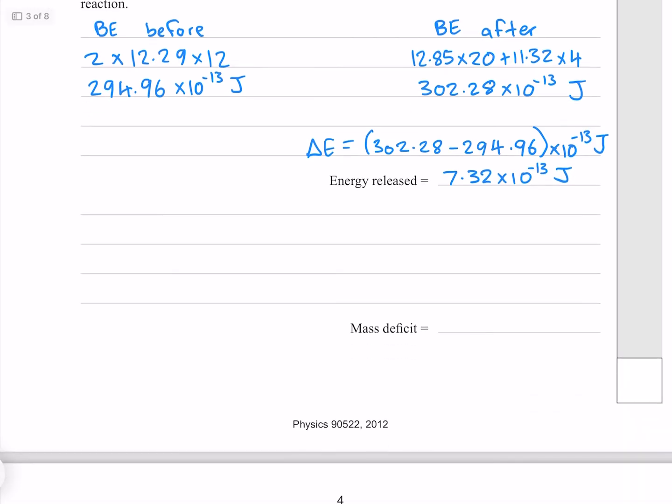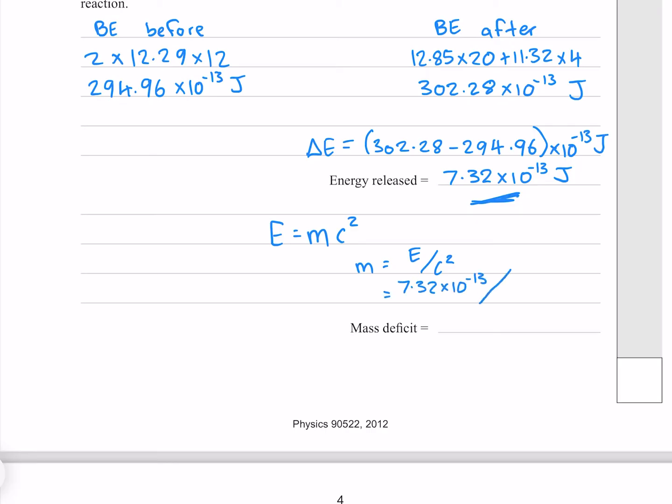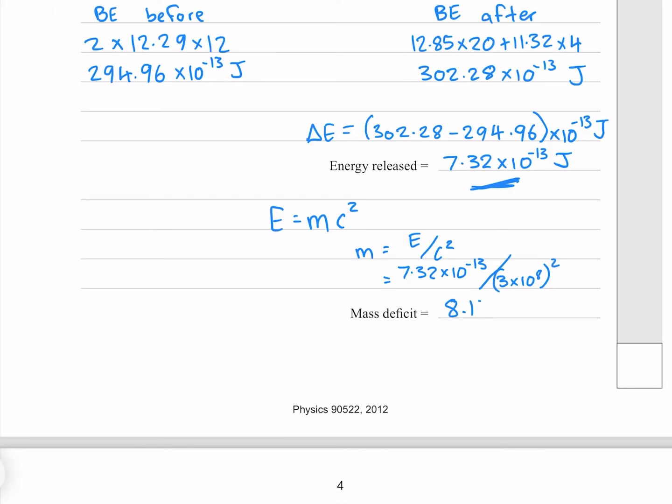Now for our mass deficit, we know that the energy is equal to mc squared, so the mass is equal to energy over c squared, where our energy is this energy here and our c is our speed of light 3 times 10 to the 8, which gives me 8.13 times 10 to the minus 30 kilograms.